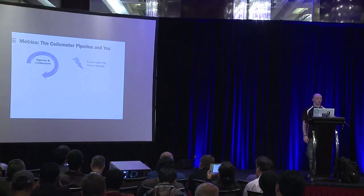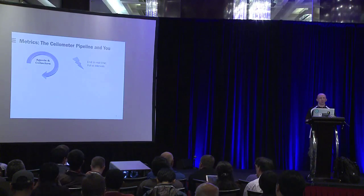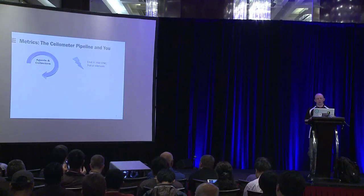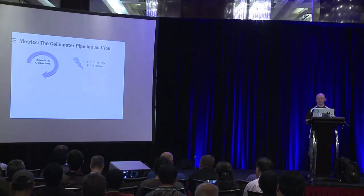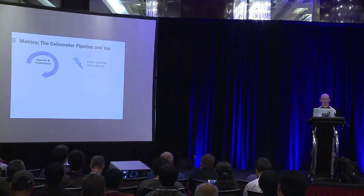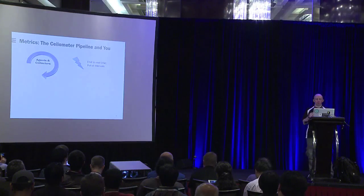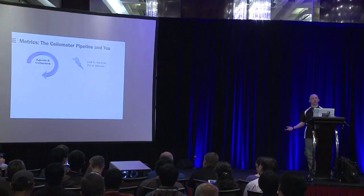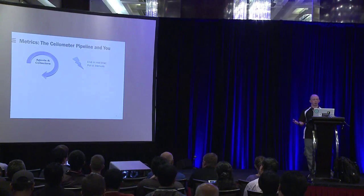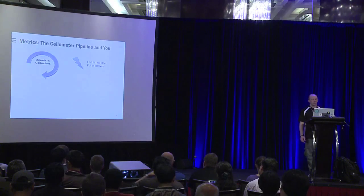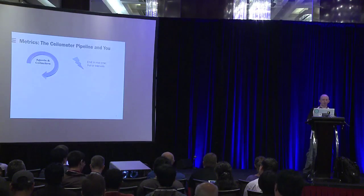The first piece is agents and collectors. Agents run on your compute nodes, network nodes, wherever, emitting information in real time to the actual Ceilometer server. Collectors usually run from the Ceilometer server and go out periodically, hitting other services asking for usage information and anything else that might be relevant.